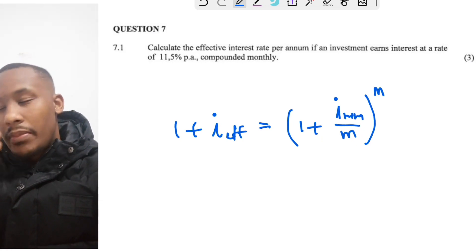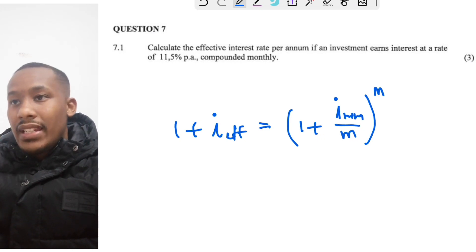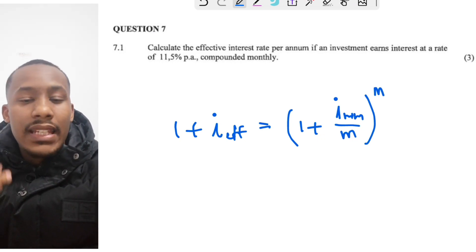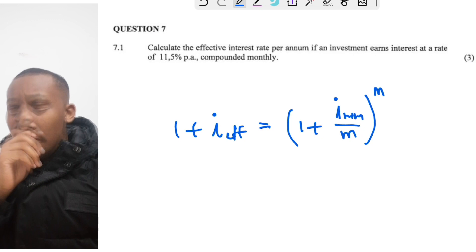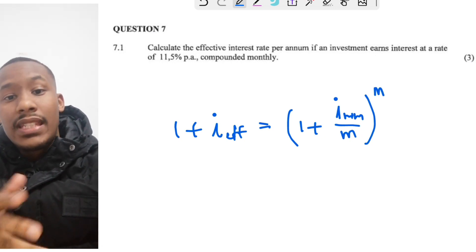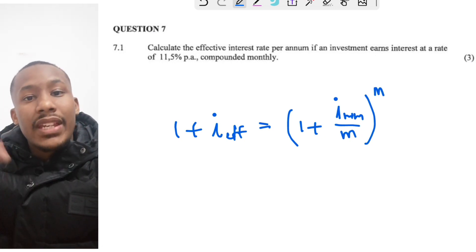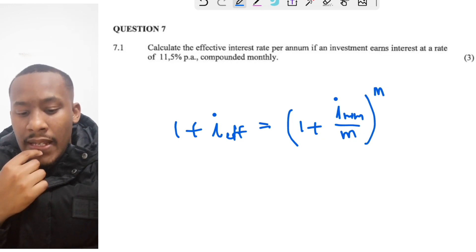1 plus i effective is equal to 1 plus i nominal divided by m to the power of m. When I talk about nominal interest, I'm referring to interest that is either quarterly, monthly, daily, and so on. Whereas effective interest is yearly. It compounds every year per annum.